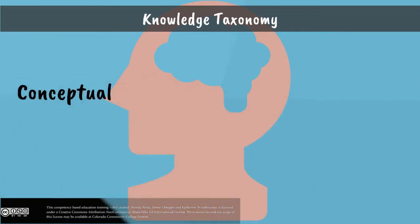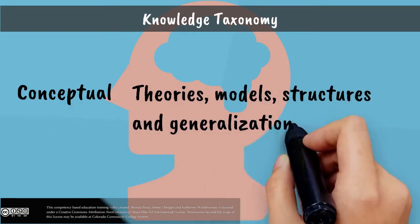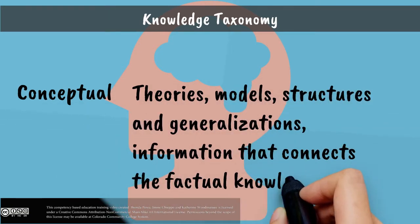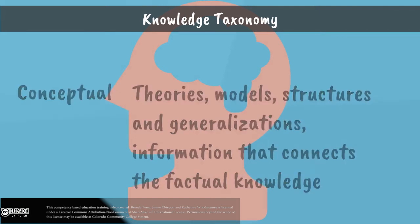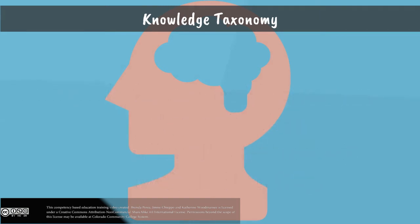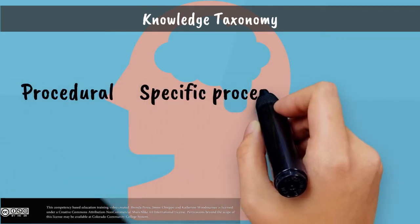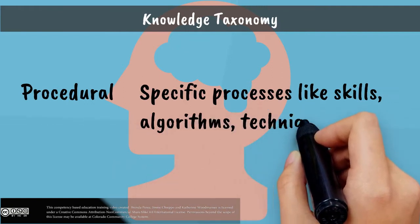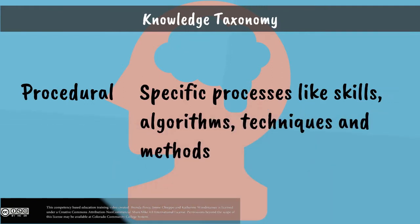Conceptual knowledge is the knowledge of theories, models, structures, and generalizations, and is information that connects the factual knowledge. Procedural knowledge has more to do with specific processes like skills, algorithms, techniques, and methods.